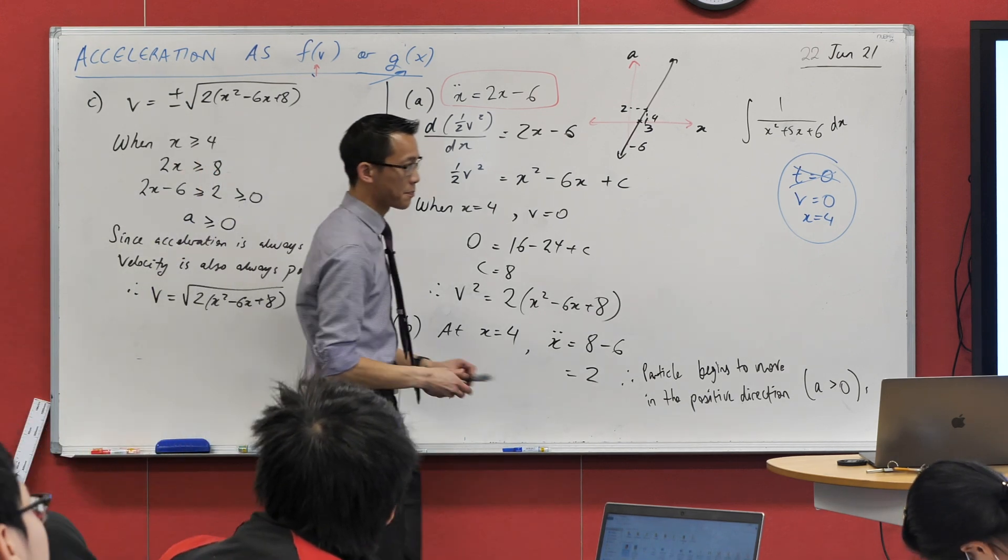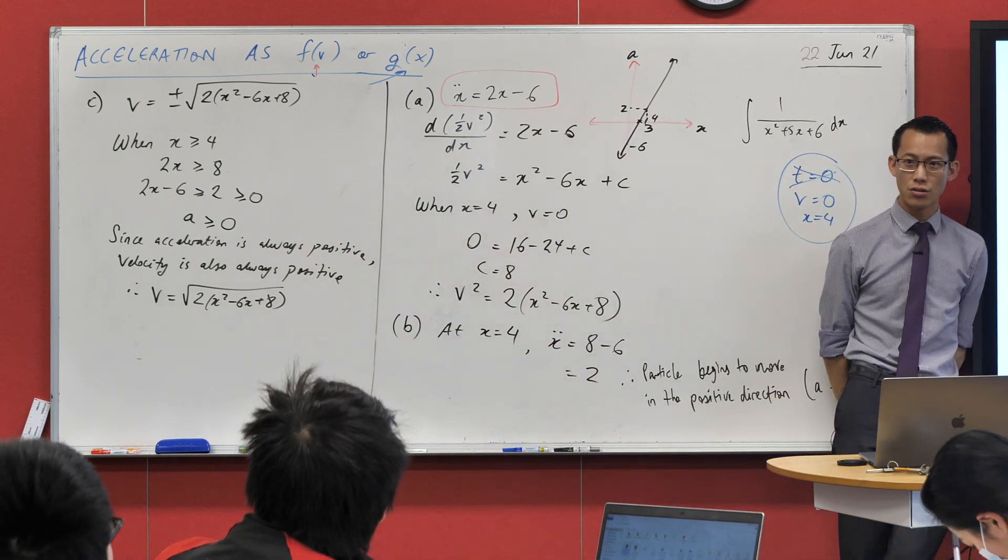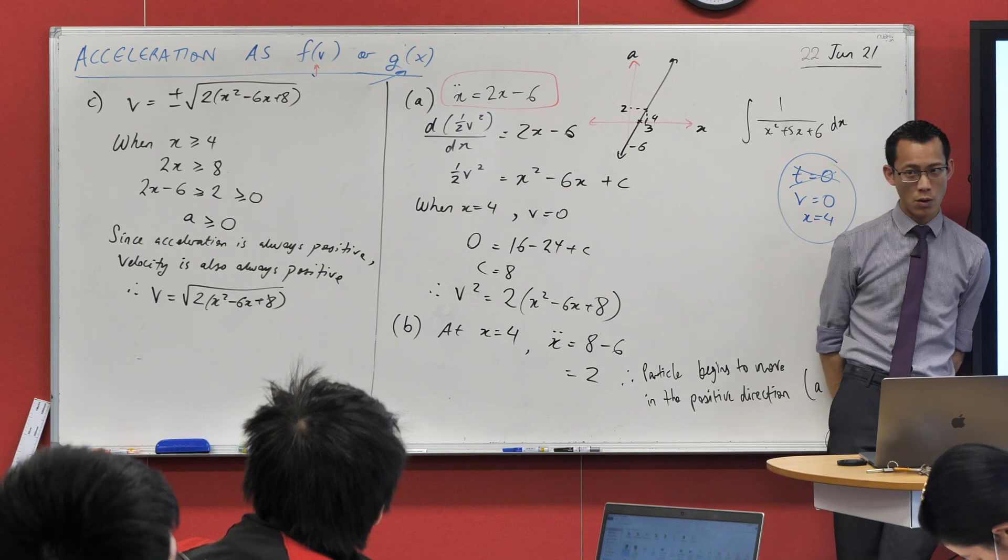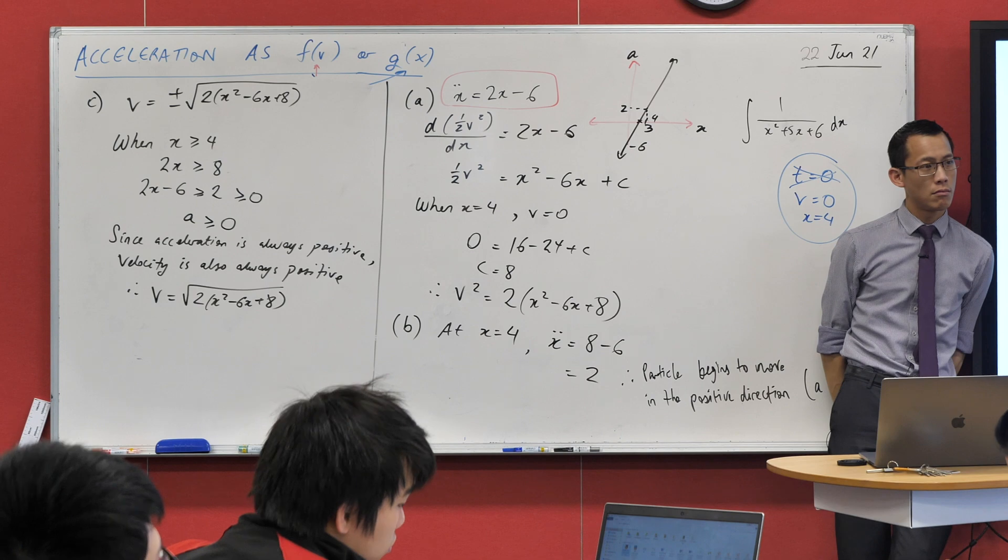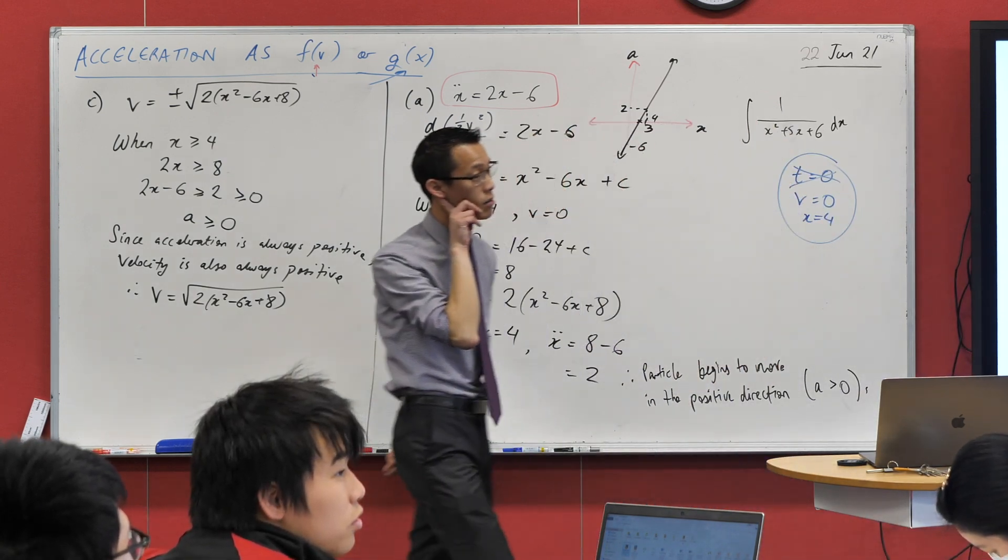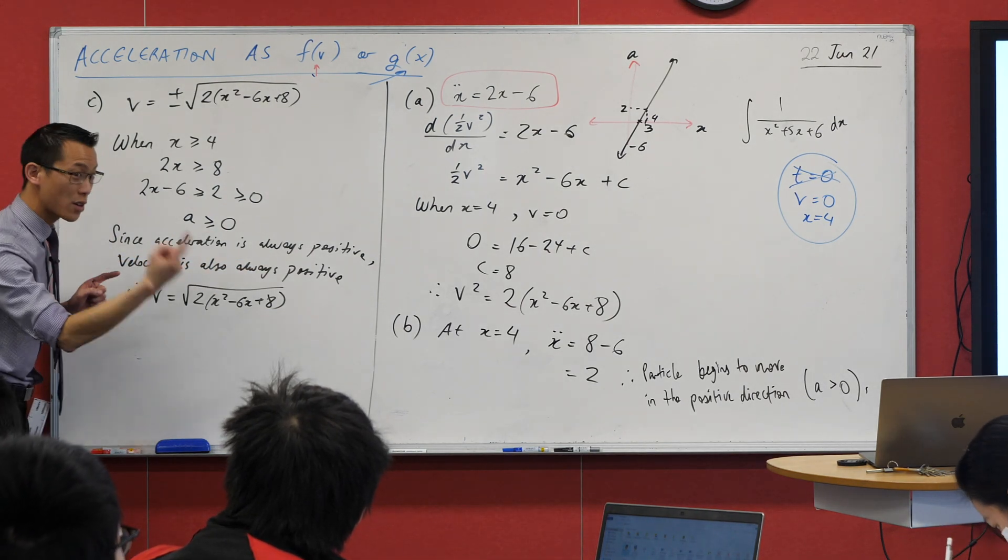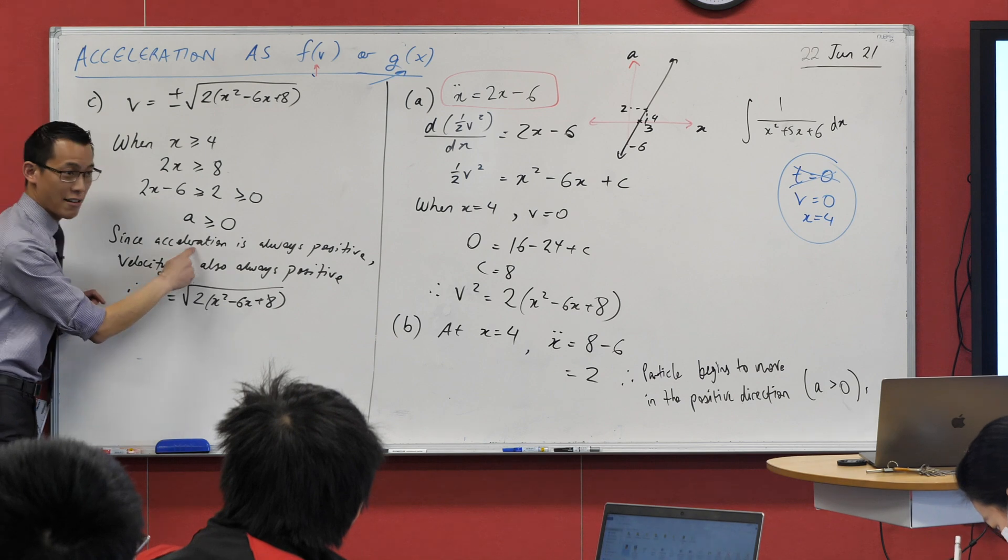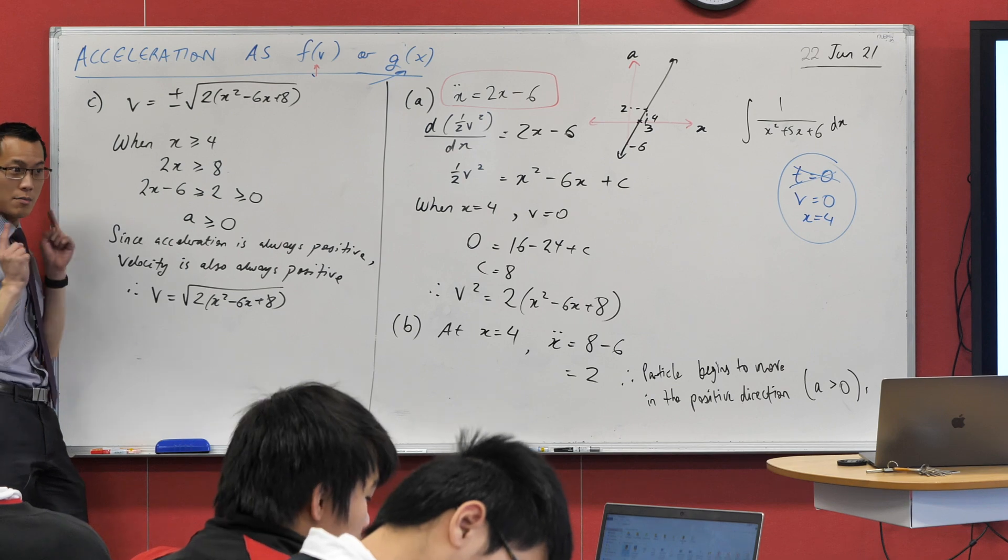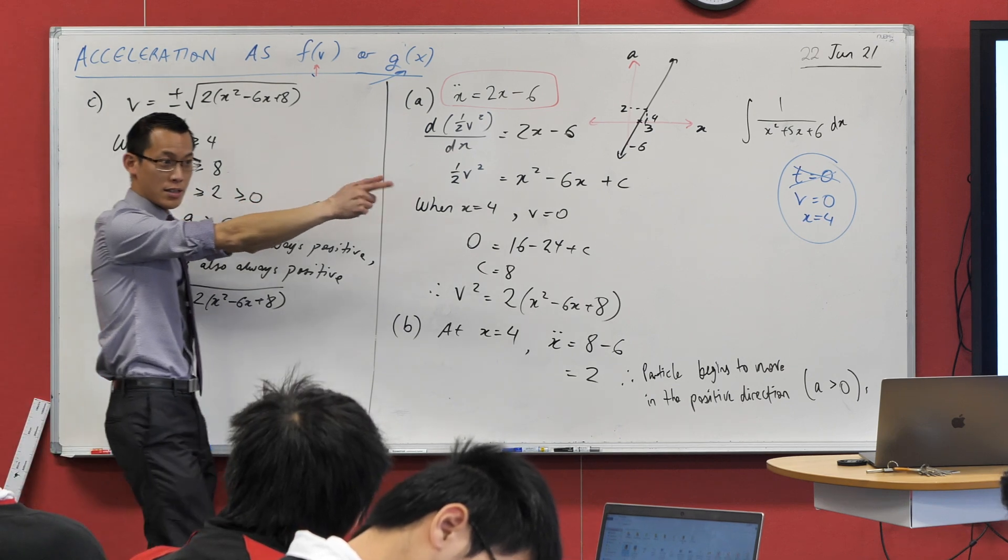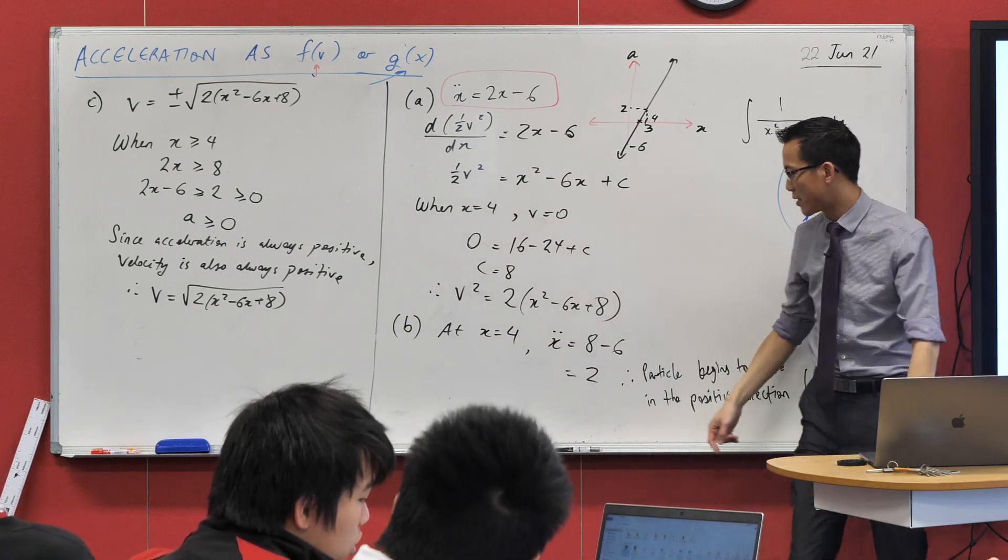We've got one last part to deal with. What's it say? Explain why the particle never returns to its initial position. Can we use part C to help us? Why doesn't it ever come back? Say that again, Sasmin. It's accelerating positively, but actually the upshot of that is that since the acceleration is always positive, the velocity is also always positive. So since my velocity, my direction of movement is always this way, I'm never going to come back to where I started. I'm just going to keep going further and further and further away.